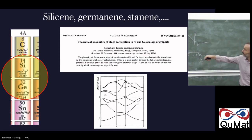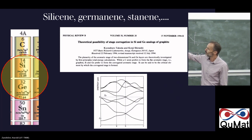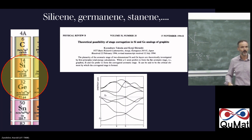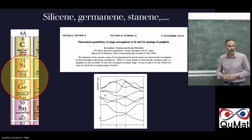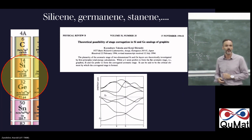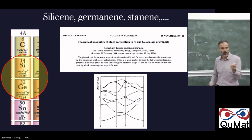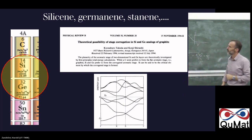Maybe there are other candidates. Looking at the periodic table, in the carbon column you have silicon, then germanium, then tin — all isoelectronic to carbon with four valence electrons. The idea of making 2D materials out of silicon or germanium was already tested theoretically by Takeda and Shiraishi, who studied silicon and germanium analogs of graphite — layers with a honeycomb structure — and found that this is theoretically possible, though these layers are not completely flat but slightly buckled.